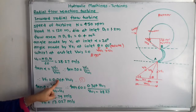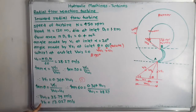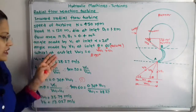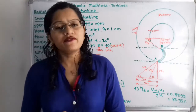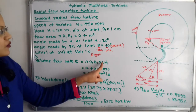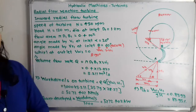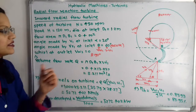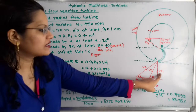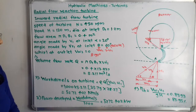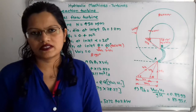Substituting Vw1 = 35.79 m/s into equation (1): Vf1 = 0.364 × 35.79 = 13.027 m/s. Now for the volume flow rate Q = π·d1·b1 × Vf1. The flow area π·d1·b1 = 0.4 m², so Q = 0.4 × 13.027 = 5.211 m³/s.